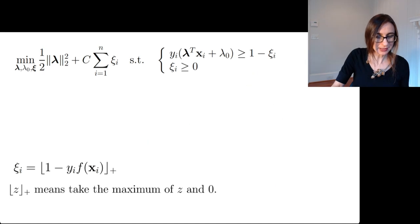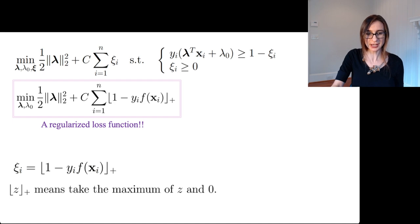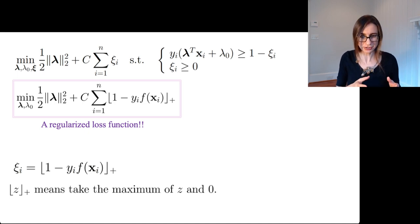Alright, so if I write it this way, I can actually get rid of all the constraints and just put that into the objective because the constraints are all taken care of in this definition of xi over here. And what I end up with is something that you might find familiar because this is a regularized risk functional, right? This has two terms in it. The first term is actually the regularization term. And the second term is actually a sum of losses over the data points.